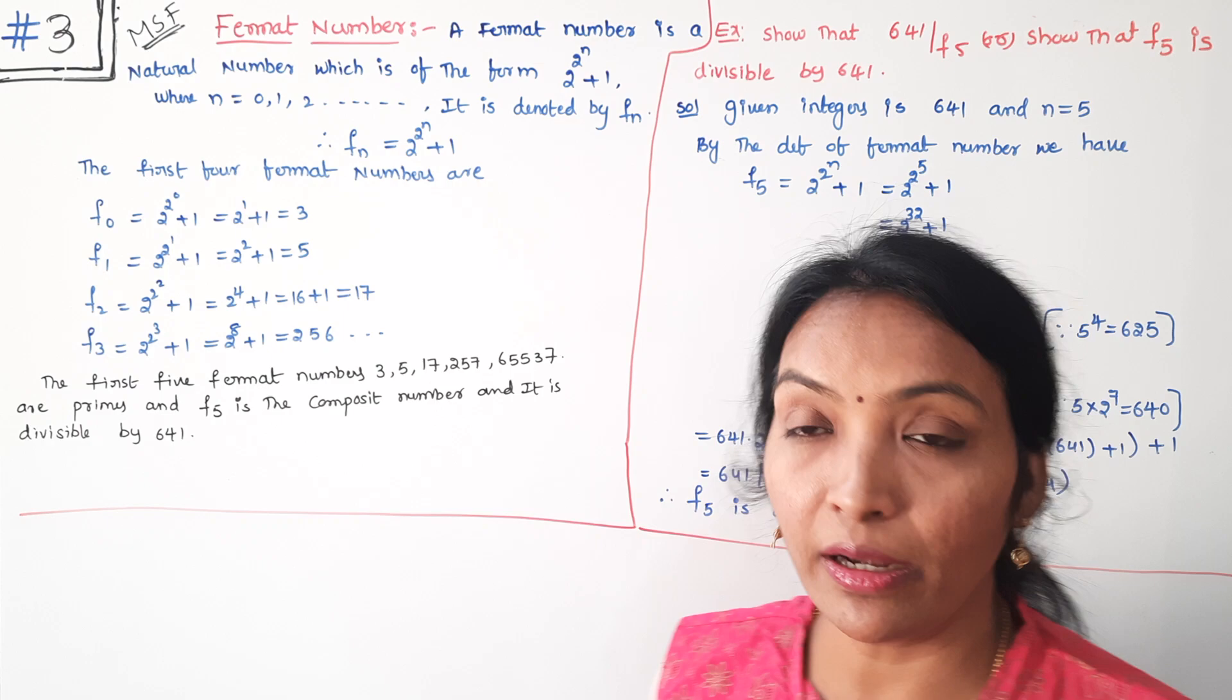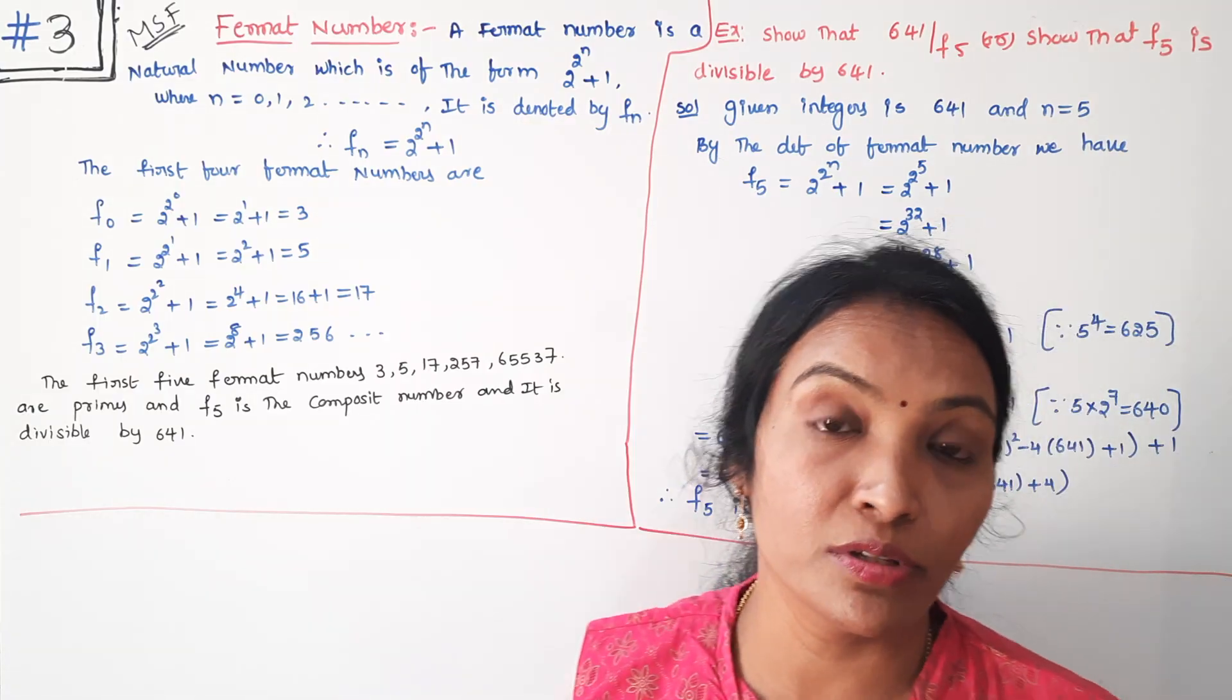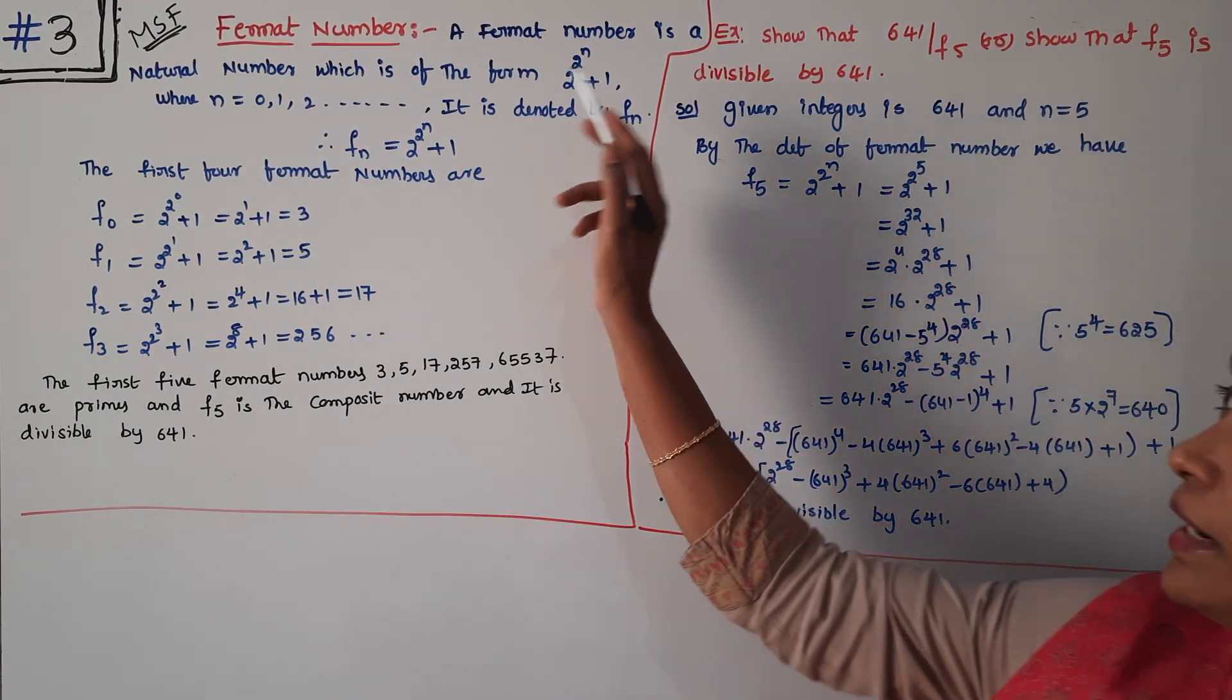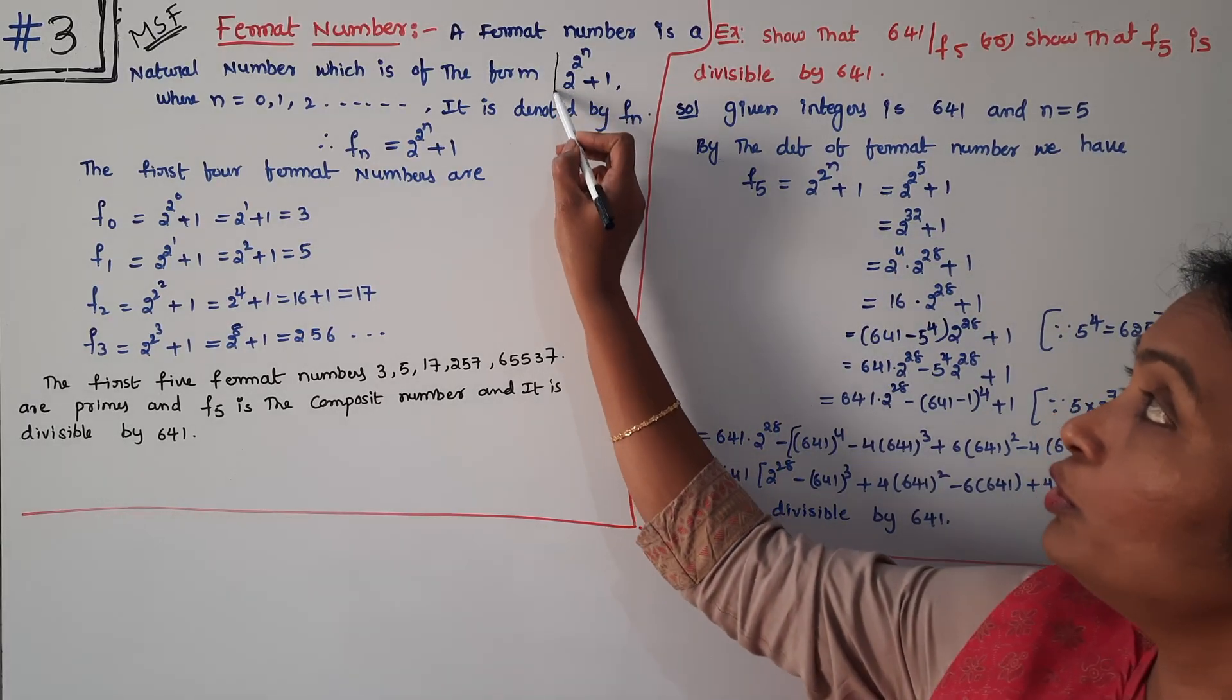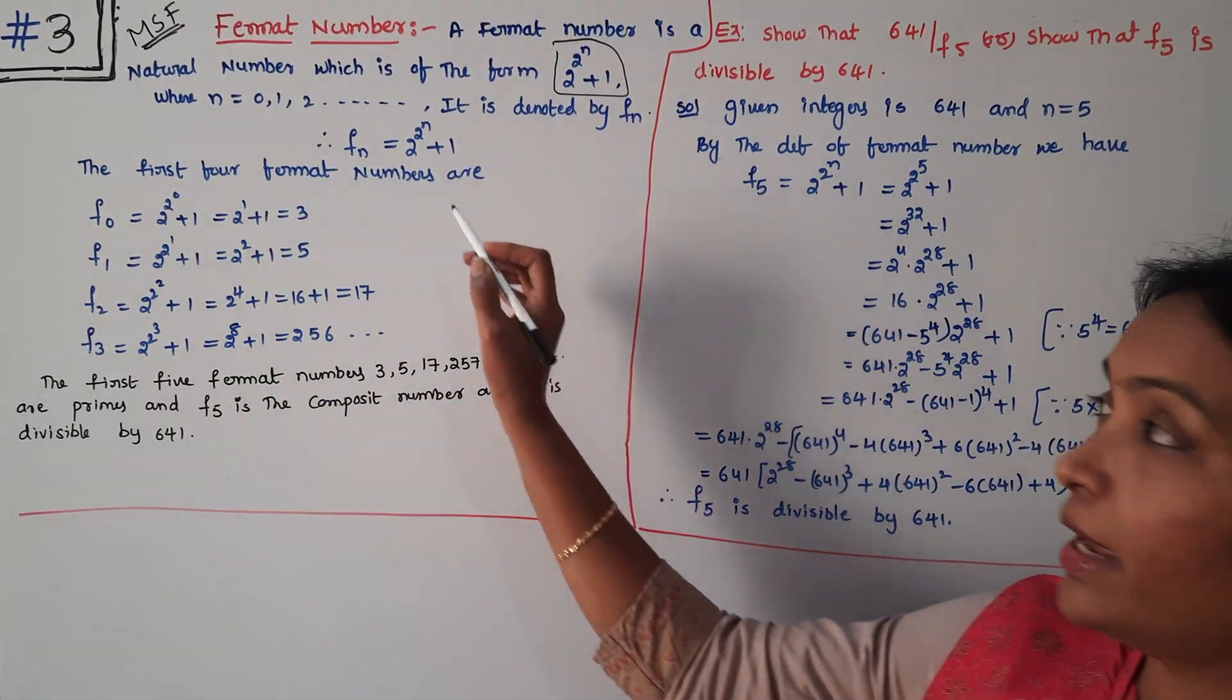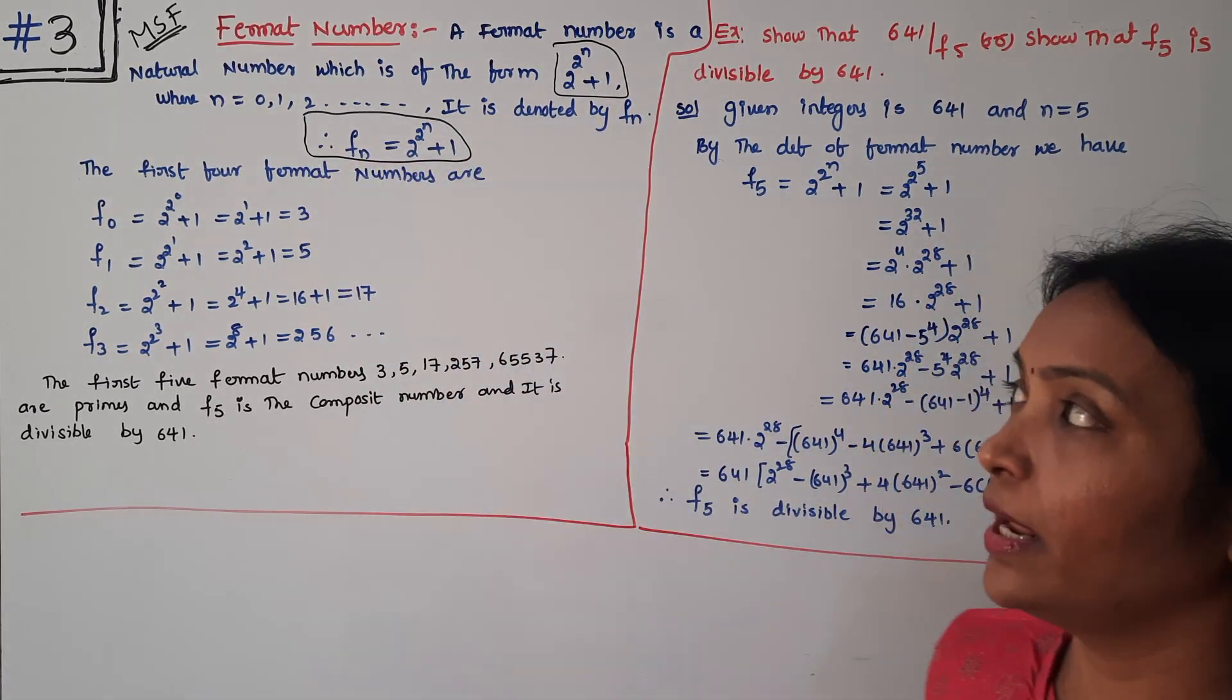First of all, Fermat Number. General Fermat Number format. Fermat Number is a natural number which is of the form F_n = 2^(2^n) + 1, where n is 0, 1, 2, and so on. We can denote it F_n to denote 2^(2^n) + 1.